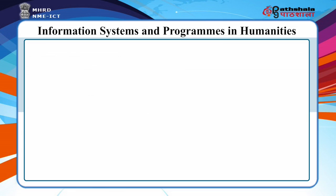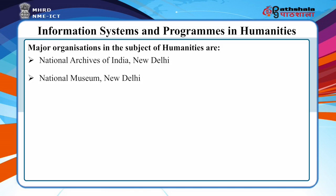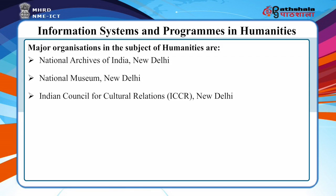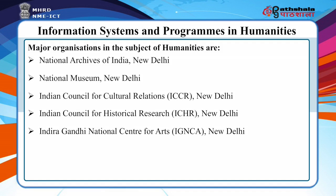In India, several organizations have come up to promote and support research activities in the field of humanities. Libraries and information centers attached to these organizations help researchers and users in their work. Major organizations in the field of humanities are the National Archives of India, National Museum New Delhi, Indian Council of Cultural Relations (ICCR) New Delhi, Indian Council of Historical Research (ICHR) New Delhi, Indira Gandhi National Centre for Arts New Delhi, and National Mission for Manuscripts, New Delhi.